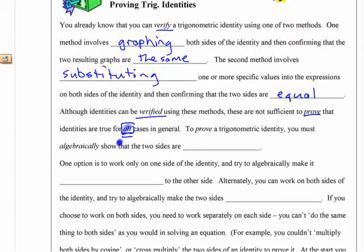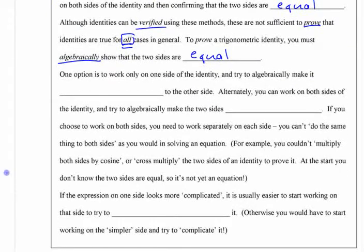You can't prove something using specific values because it might be true for that value but not for every value. Okay? To show it's true for all values, you have to be able to work with it algebraically and show both sides are equal. Okay? Show algebraically two sides are equal. You've sort of been doing that, the preliminary of simplifying things so far. You have a couple different options here. One option is to work only on one side and then try algebraically to make it equal to the other side.